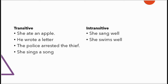Intransitive verbs — akarmakam — are verbs without an object. For example, 'she sings a song' is transitive, but 'she sings well' — here 'sings' is used as an intransitive verb.